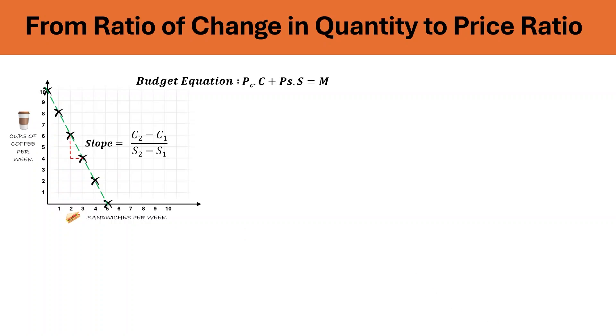Now, budget equation is represented by PC into C plus PS into S is equal to M. We can also represent the same equation in this form, where I have kept C on the left-hand side, and we take rest of the values to the right-hand side. Calculating for C, we get this. What does that mean? That whatever money is left after purchasing sandwiches divided by price of coffee would give you number of coffees. We can also express it as C2 equals M minus PS into S2 over PC, or C1 would be equal to M minus PS into S1 over PC.